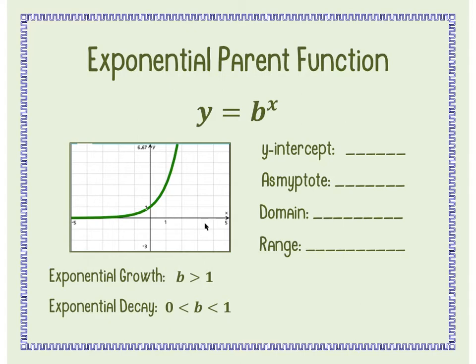What is the y-intercept of any number to the x power? The y-intercept is going to be (0, 1). This is also considered your 'a' value. If you don't see an 'a' value — that's the number in front of b — then it's always going to be a 1.